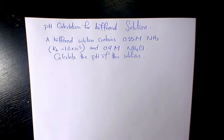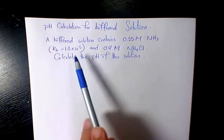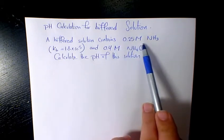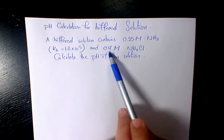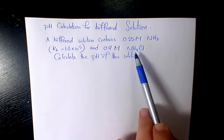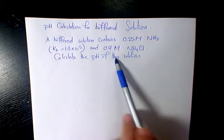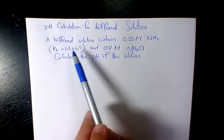What's up guys, this is Massey. Welcome to another video. In this video I want to show you how to find out the pH of a buffered solution. This buffered solution contains 0.25 molar NH3, which is ammonia, and 0.4 molar NH4Cl, which is ammonium chloride. Calculate the pH of this solution when Kb is 1.8 times 10 to the negative 5.